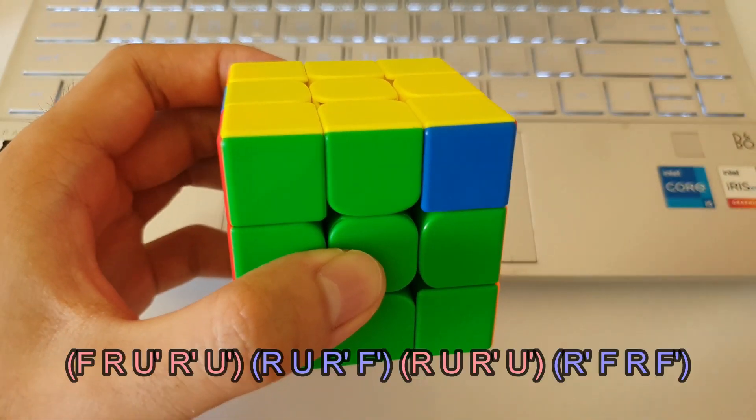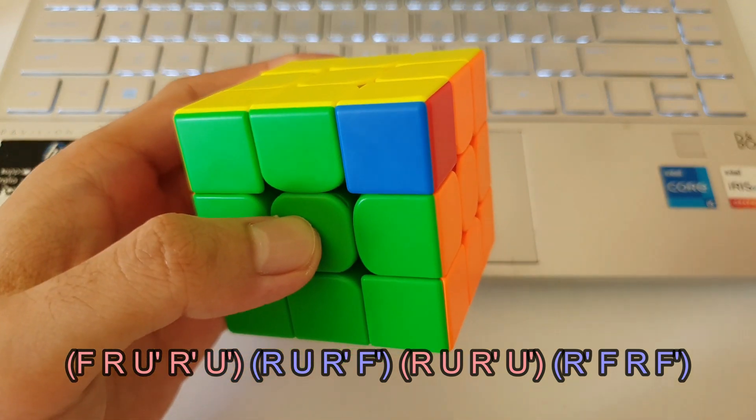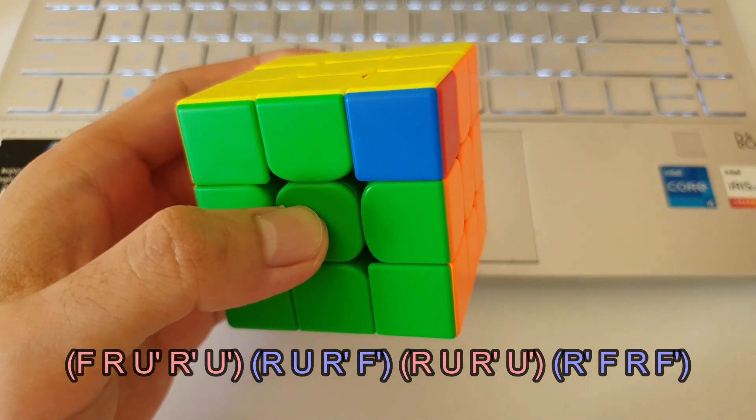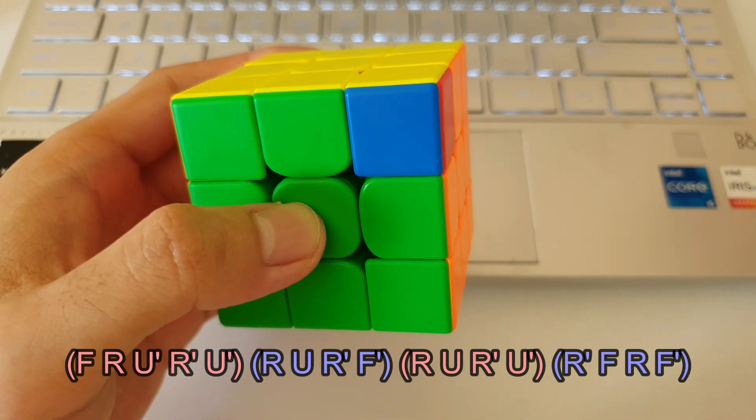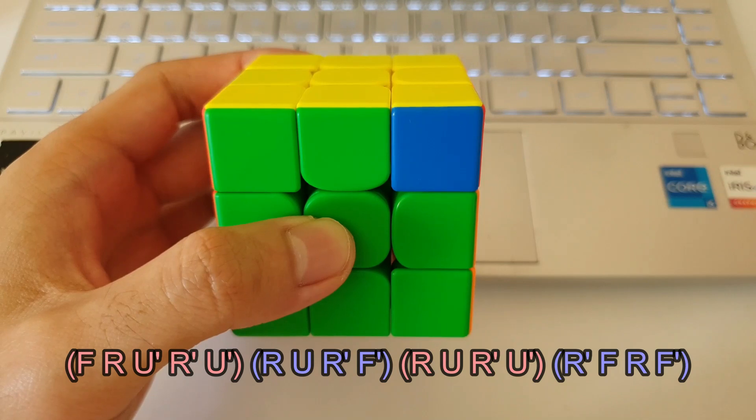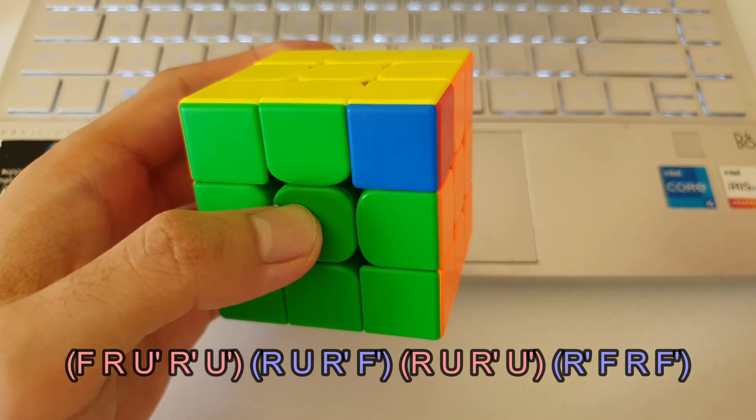So by breaking the algorithm up into these smaller triggers, it actually makes it a lot easier to remember. Even though these triggers are quite common, it might be difficult to put them together. So I'll go through the algorithm again quickly, just to make sure you've got everything.